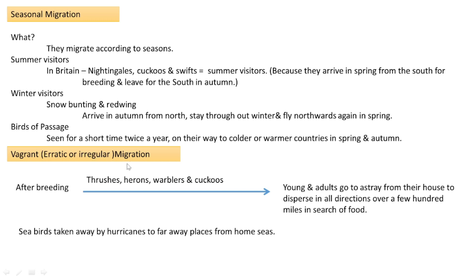Vagrant, erratic, or irregular migration is another type. As the name indicates, this migration pattern is not regular and has no peculiar pattern. After breeding, thrushes, herons, warblers, and cuckoos show this type of migration. The whole group does not move in the same direction — they scatter to different directions. An example is sea birds taken far away from their home seas by hurricanes or storms.